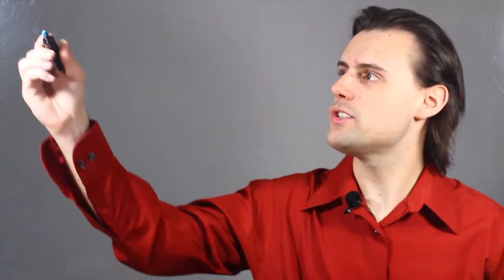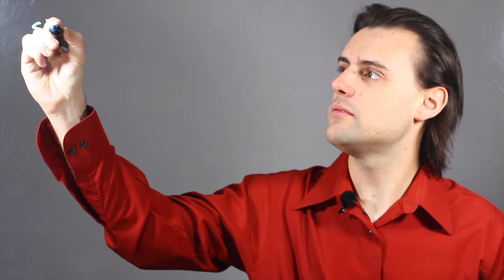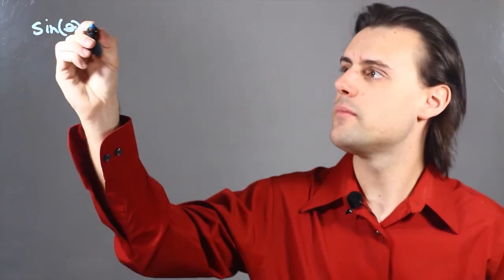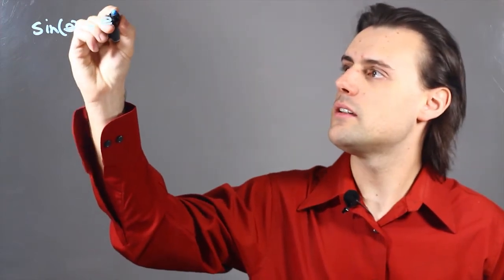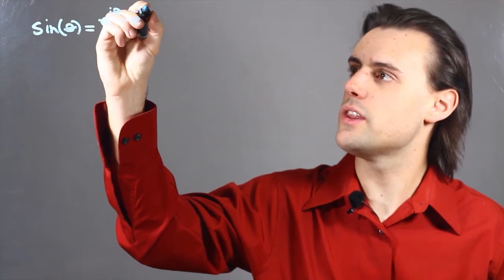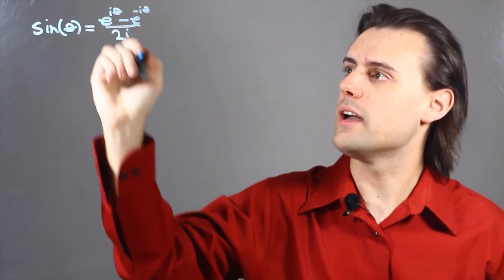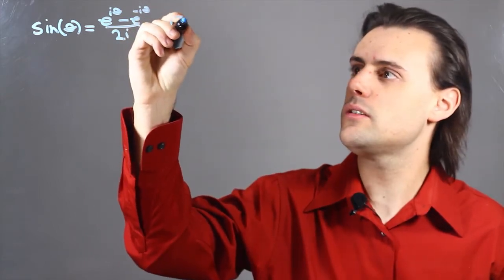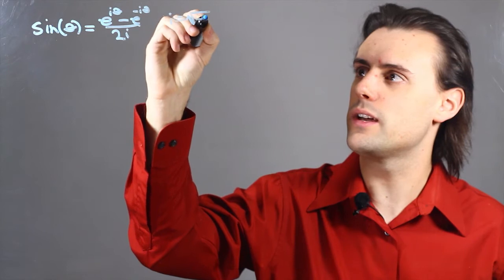A trigonometric expression, such as sine of theta, can be written in terms of exponentials using Euler's formula as e to the i theta minus e to the minus i theta all over 2 times i, where i in this expression is the imaginary unit, which is equal to the square root of negative 1.